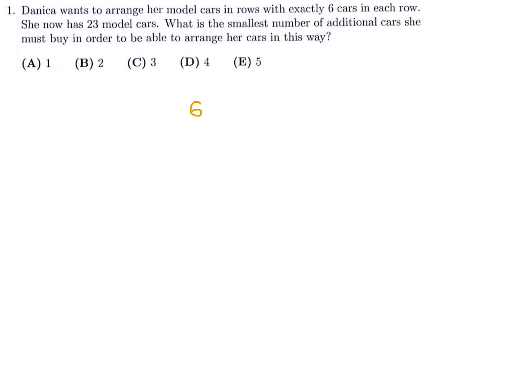She has 23 cars, and 23 can be arranged as 6, 6, 6, but then you'll have 5 left over. So if she wants all of the cars to be exactly 6 in each row, she needs one more car. That would make it equal 6, giving her 4 rows of 6. So the answer for number 1 is A.